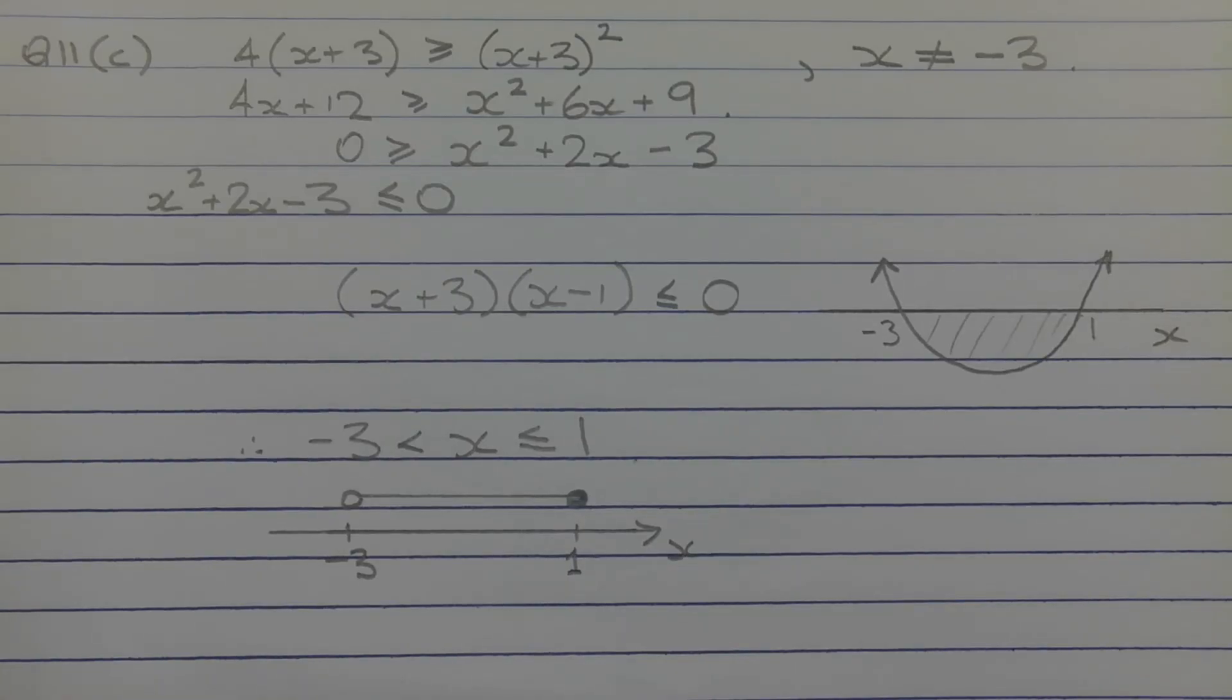The denominator of the inequality on the left-hand side is a simple linear function x plus 3. Because it's in the denominator, x cannot equal negative 3 since we'll get division by zero. Now we can solve this